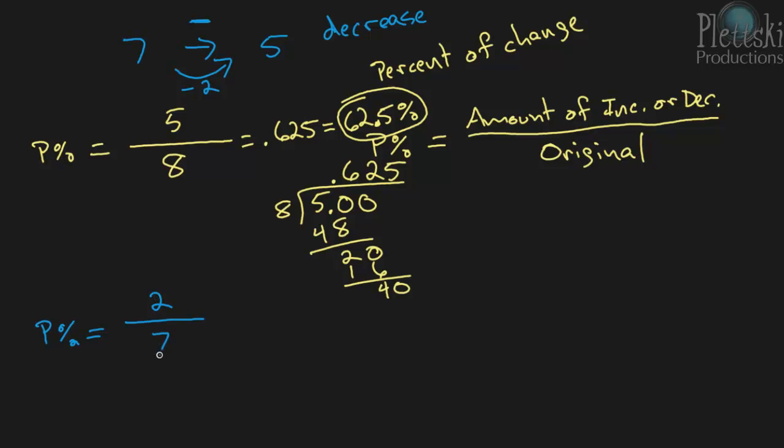So we have 2 in the numerator, 7 in the denominator. And we want to change this, well, first to a decimal, and then to a percent. So 2 divided by 7.